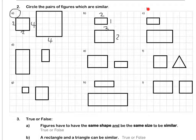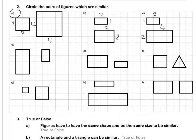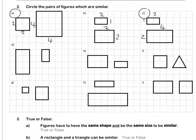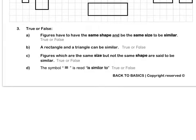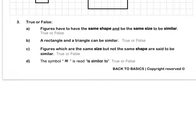Lastly, C. The first rectangle is one unit by two units. The larger one is two units by four units. I have doubled my width and I have doubled my length. Therefore, these two rectangles are similar. Pause this video to complete this question by yourself. Question three. True or false? Pause this video to complete this question by yourself.